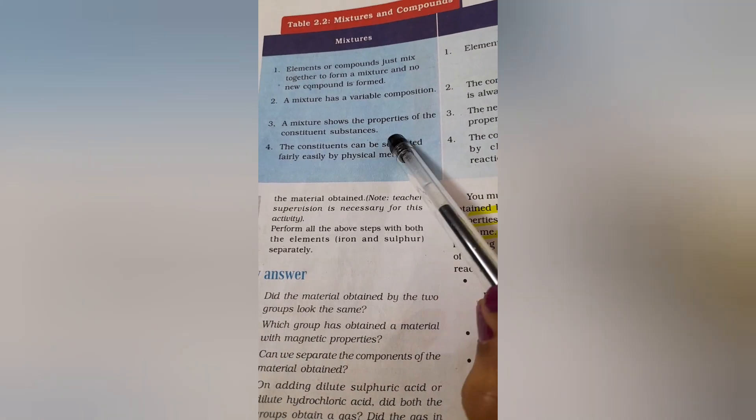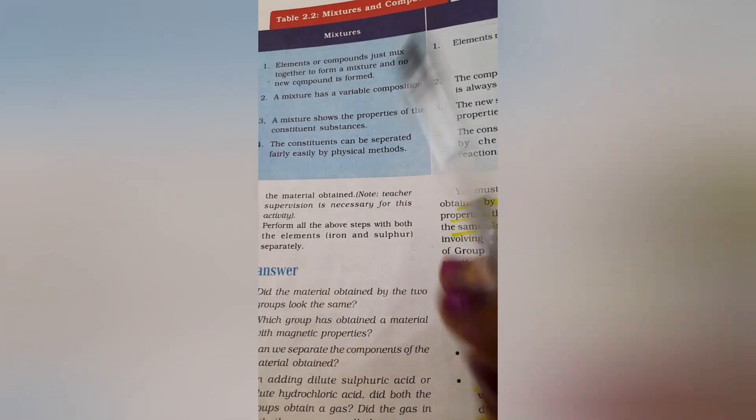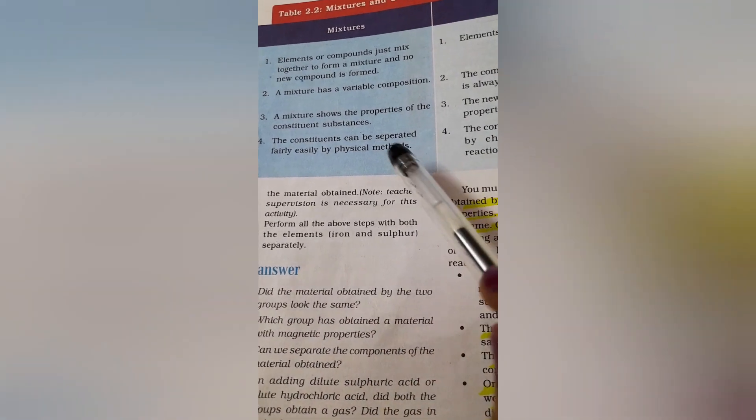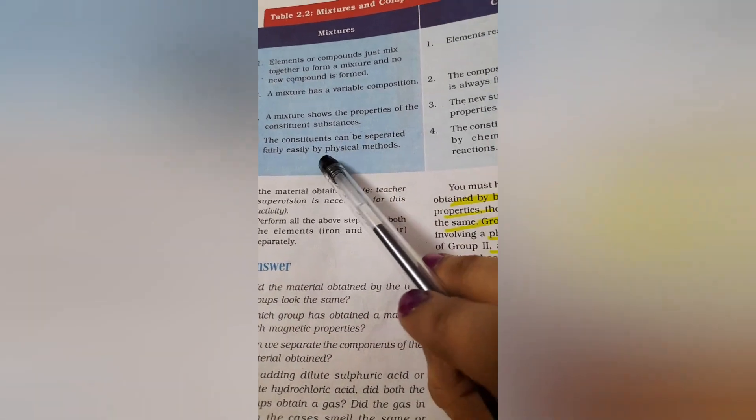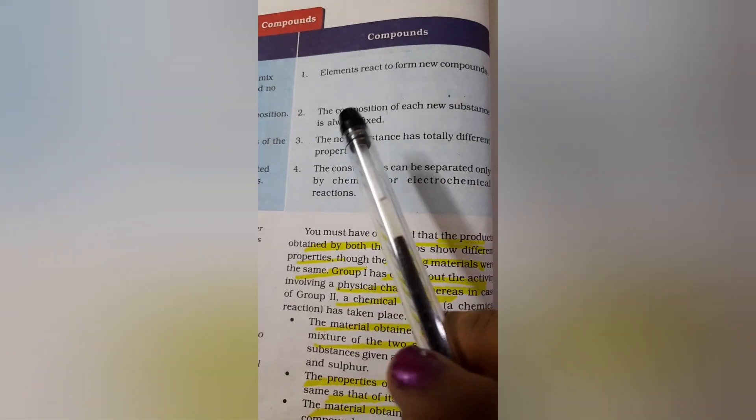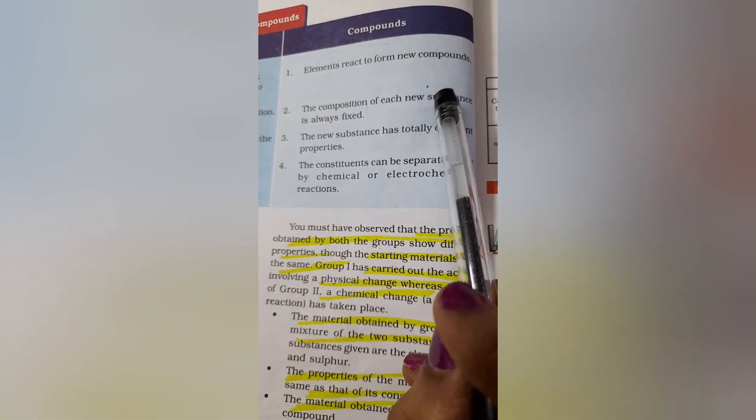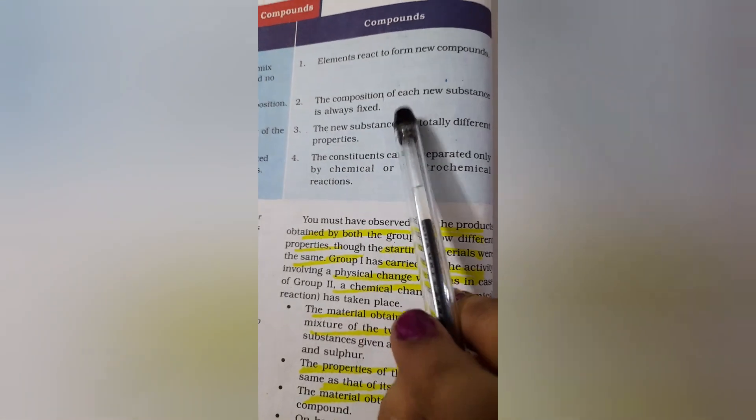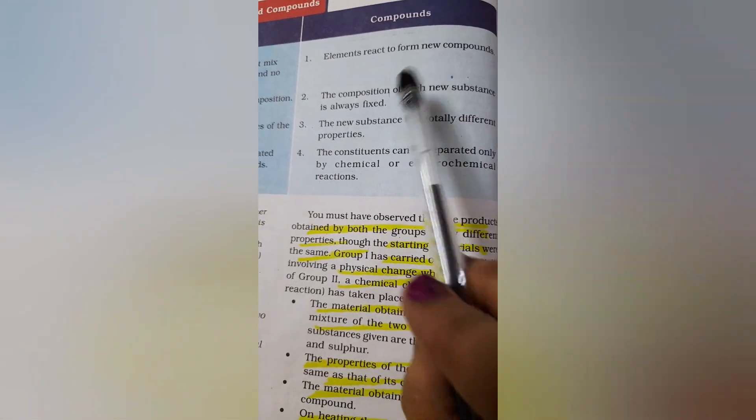Mixture shows properties of constituent substances. Whatever is contained in the mixture, the properties are shown by the mixture. You can easily separate the constituents by physical method, whereas elements will react to form new compounds and always the composition in this case is fixed.